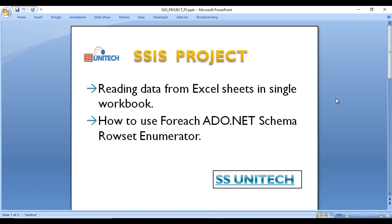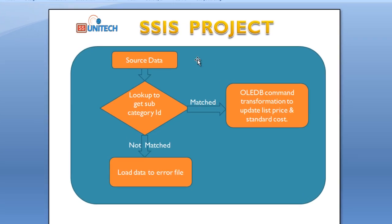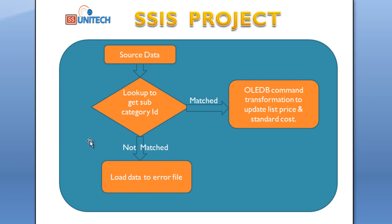I've created a basic overview of how to design the pattern. First we have the ForEach Loop Container, which will loop through all the Excel sheets. Once we get each sheet, we retrieve data from the source. Then using a Lookup transformation we get the subcategory ID. If data is matched we have two outputs: match output and no-match output. For no-match, the source data gets loaded into an error file. For match, we use the OLEDB Command transformation to update list price and standard cost.